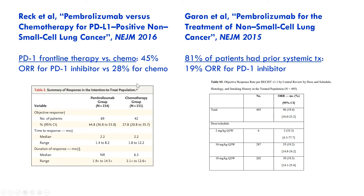How much activity do they have and is it important? We can read the literature. These charts are from some of the more broadly cited studies of PD-1 inhibitors, of which pembrolizumab is probably the most effective. This study is as frontline therapy: for lung cancer patients who had not received any systemic therapy, they compared the PD-1 inhibitor to chemotherapy and saw a 45% objective response rate for the PD-1 inhibitor compared to 28% for chemo — an incredibly impactful study largely responsible for that $30 billion annual sales figure.